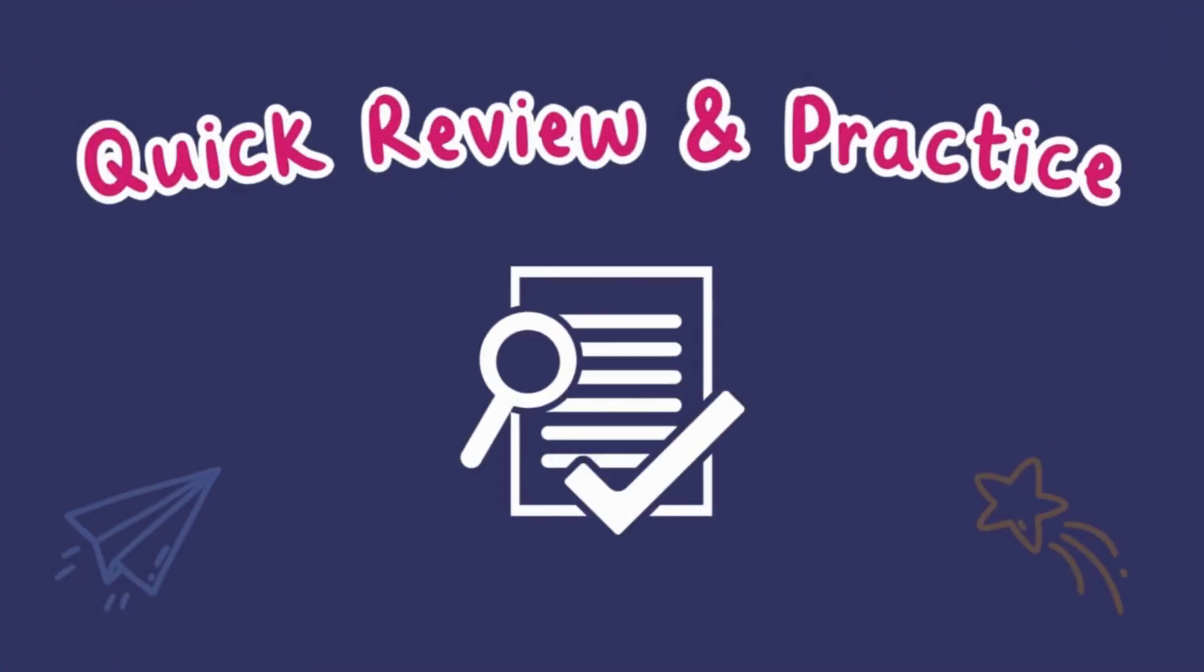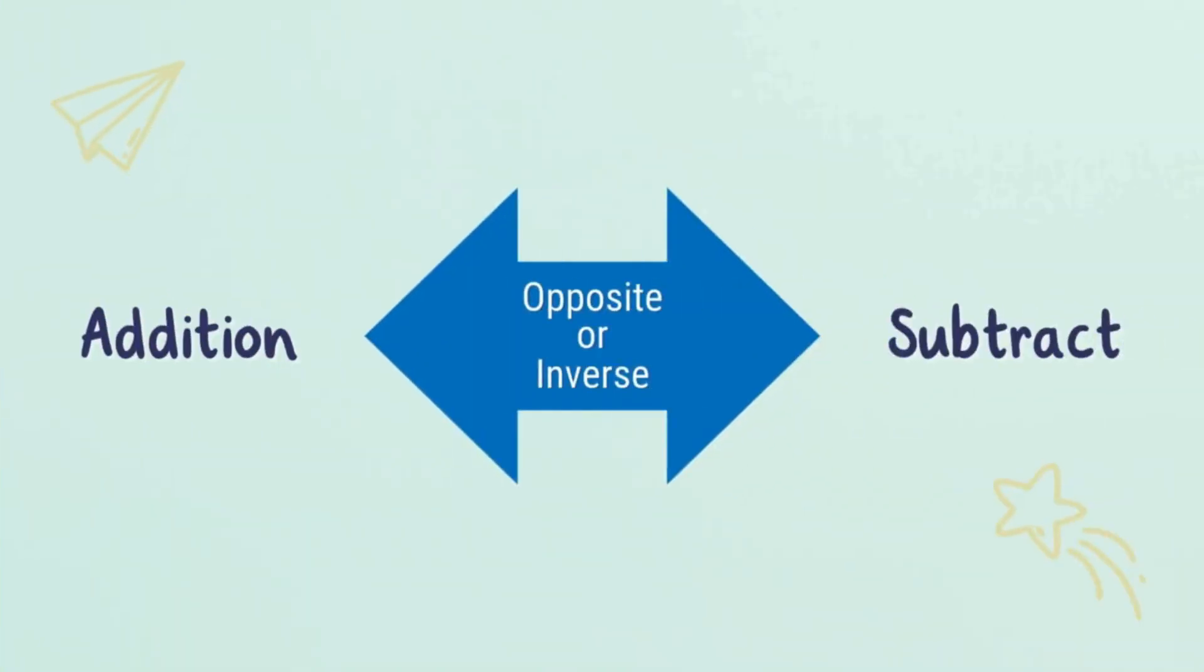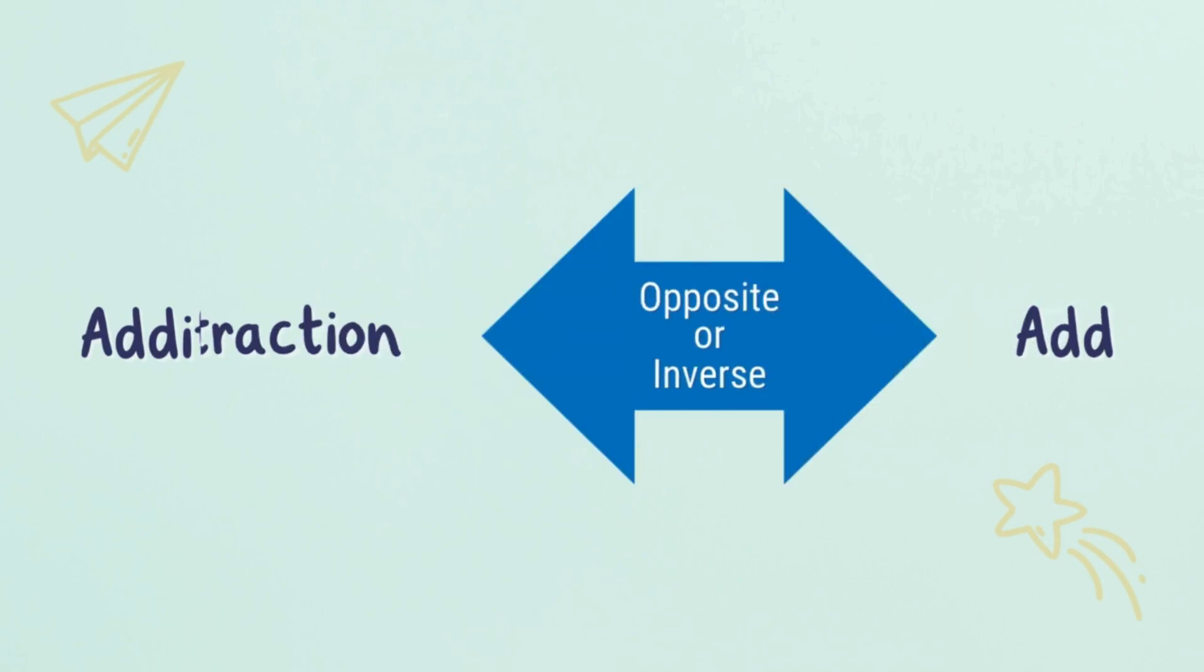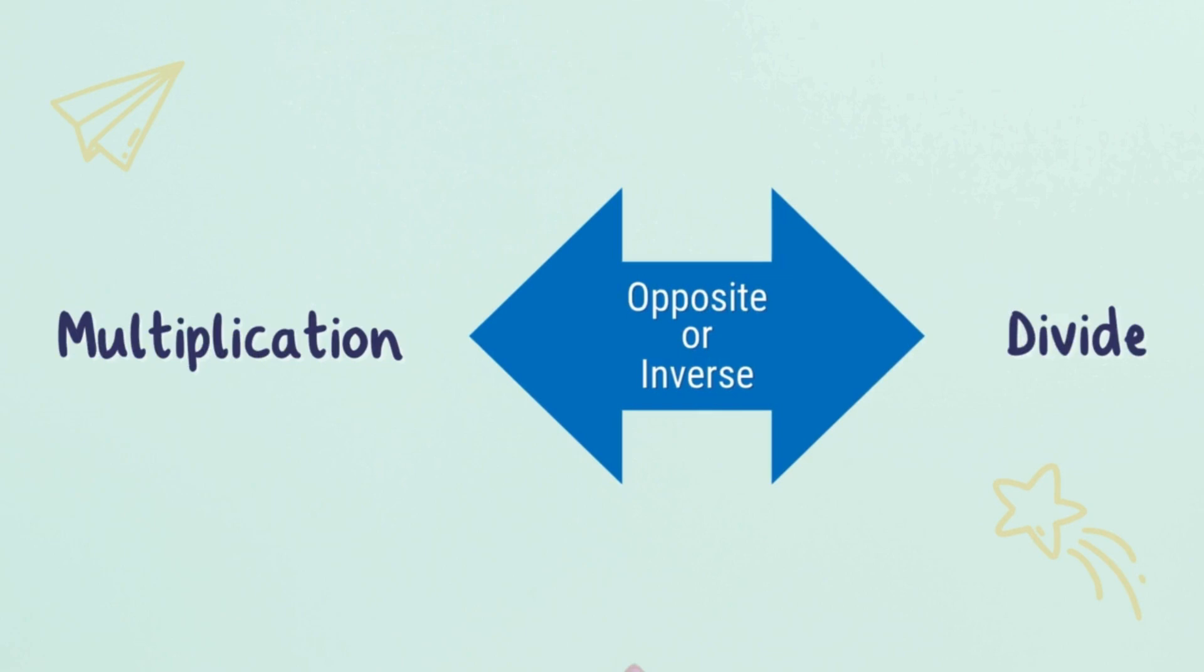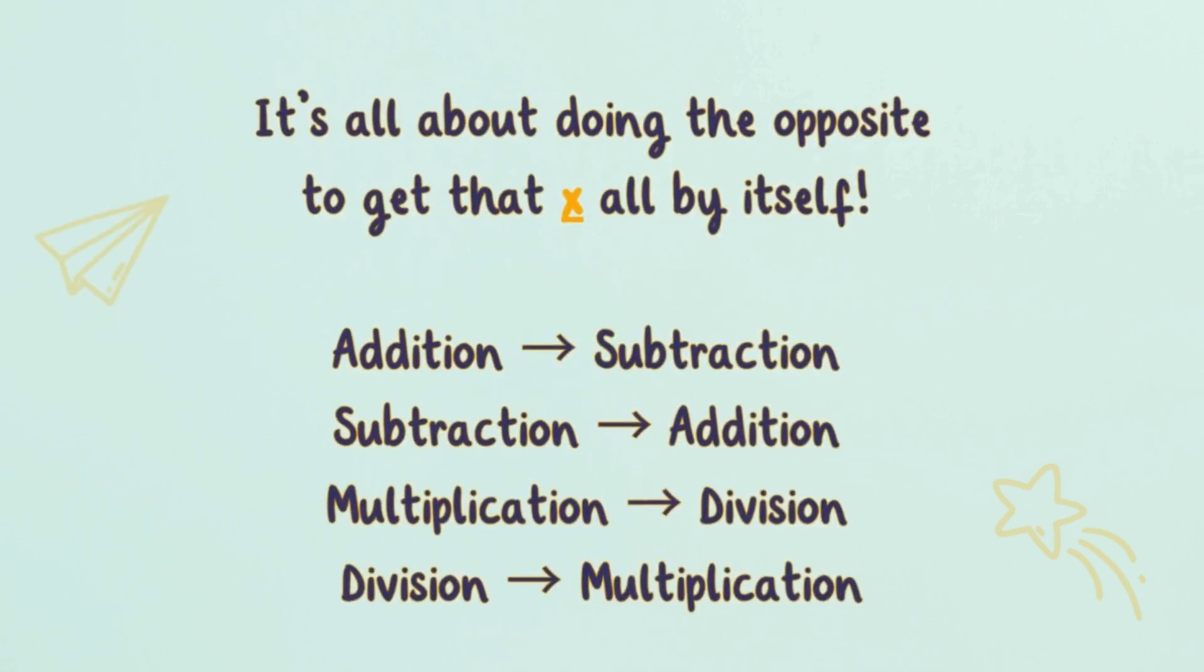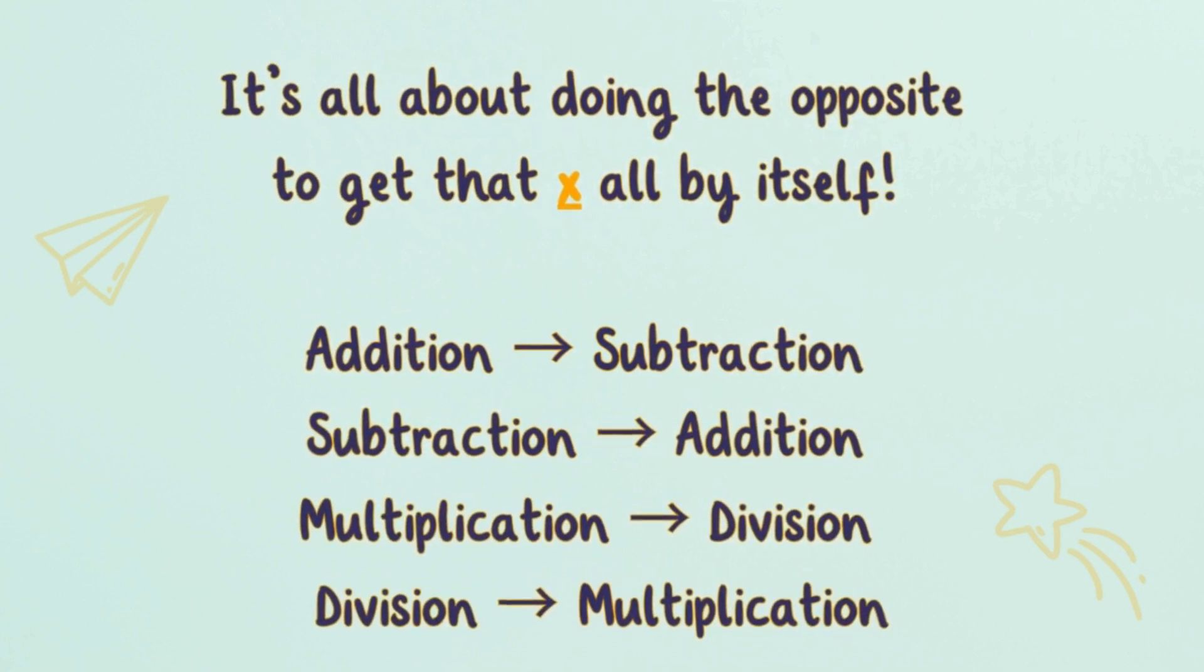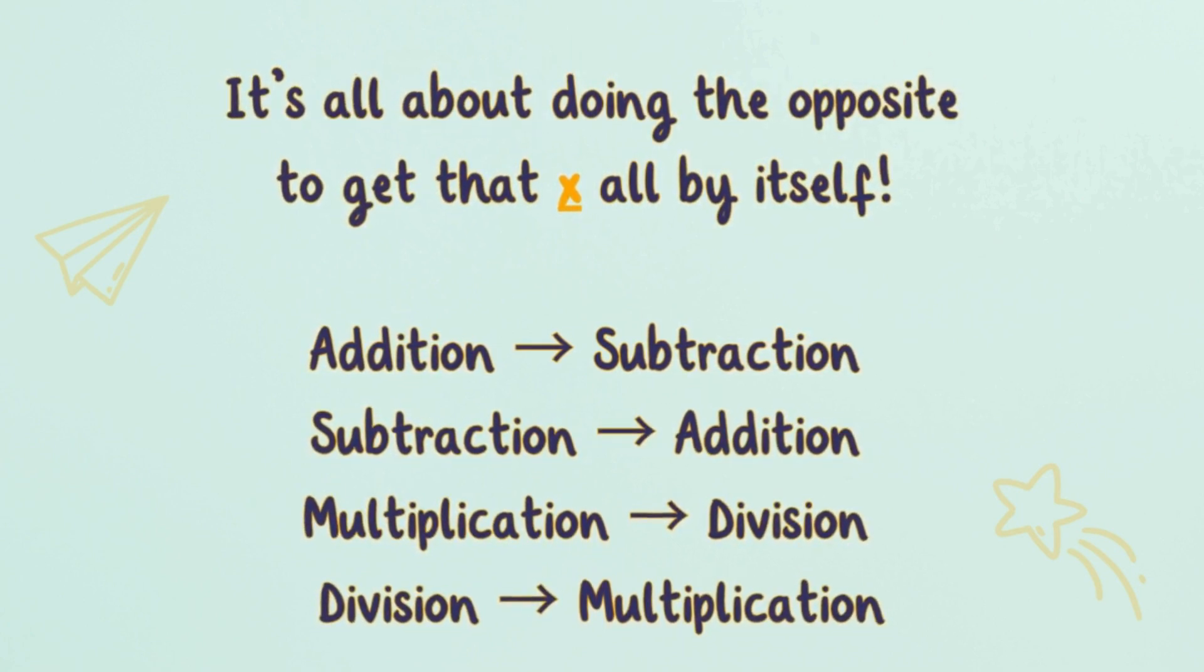Now let's do a quick review. For addition equations, you subtract. For subtraction, you add. For multiplication, you divide. And for division, you multiply. It's all about doing the opposite, or the inverse, to get that x all by itself. Easy, right?